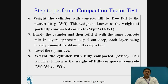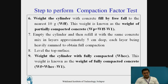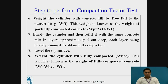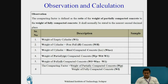After filling the cylinder, level it again by the trowel or tamping rod. Weigh that filled cylinder again — that is the weight of the cylinder with the fully compacted concrete, which we call WHCC. This weight is known as the weight of the fully compacted concrete: WF = WHCC minus W1. The compaction factor is defined as the ratio of the weight of the partly compacted concrete to the weight of the fully compacted concrete.